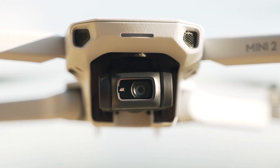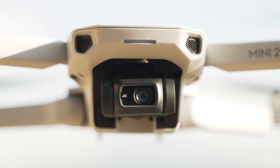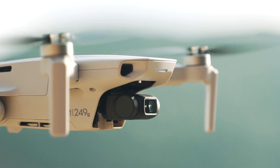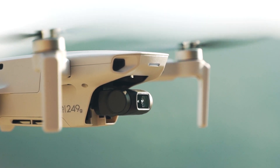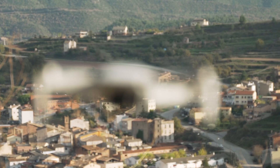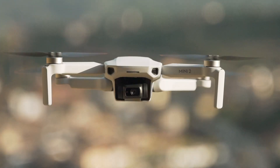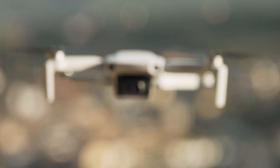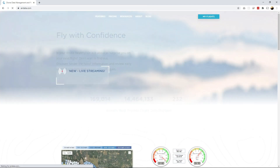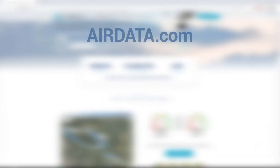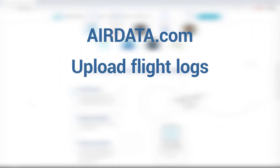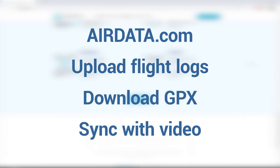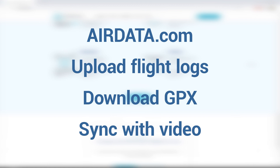Now if you forgot to enable video subtitles, or your drone doesn't record GPS data to these subtitles — like the Mavic Air one — you can still create telemetry overlays for your flights. Go to Airdata.com, upload your flight logs, and download them as GPX files. You will need to sync them with the video, so make sure to check out the tutorial that covers that.